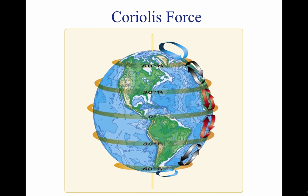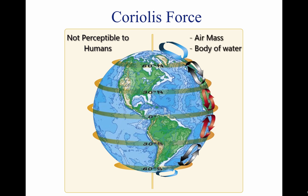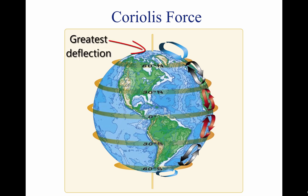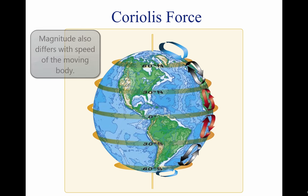The force created by the rotation of the Earth is known as the Coriolis force. This force is not perceptible to humans as they walk around, because humans move slowly and travel relatively short distances compared to the size and rotation rate of the Earth. However, the Coriolis force significantly affects bodies that move over great distances, such as an air mass or body of water. The Coriolis force deflects air to the right in the northern hemisphere, causing it to follow a curved path instead of a straight line. The amount of deflection differs depending on the latitude — it is greatest at the poles and diminishes to zero at the equator. The magnitude of Coriolis force also differs with the speed of the moving body; the greater the speed, the greater the deviation.